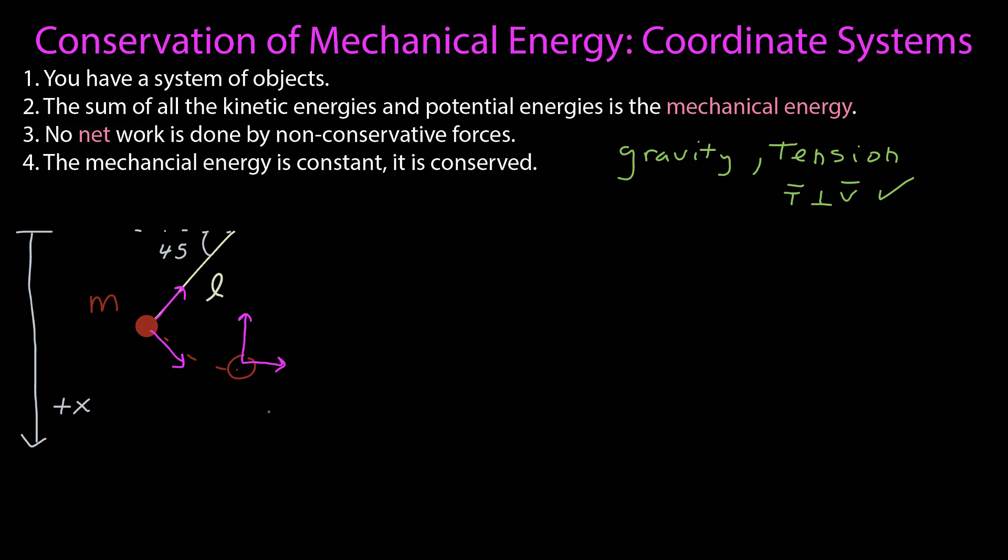We next need a coordinate system. I decided to put my origin of the coordinate system at the pivot point where the string is attached. And this time, I decided to have positive x down. So what does that mean? Here's the functional form of my force. I know it has a magnitude of the mass times the acceleration due to gravity, and it always points towards the center of the earth, which, given this coordinate system, is along the positive x direction. I'm going to extract from that just the components, so I have F is equal to positive mg.